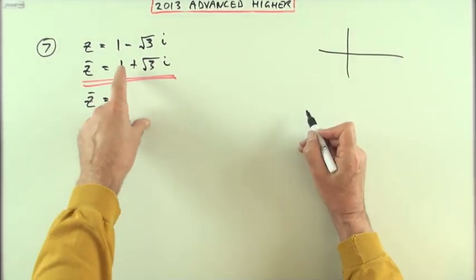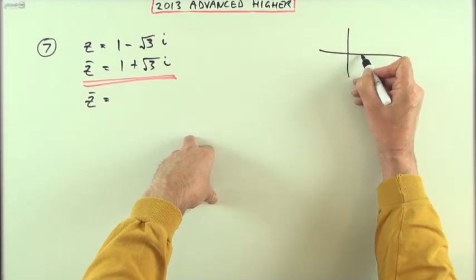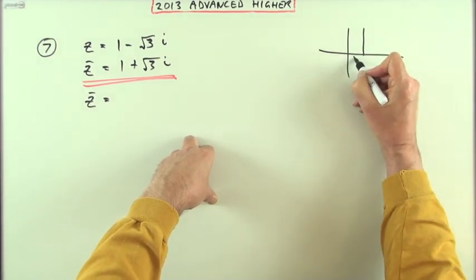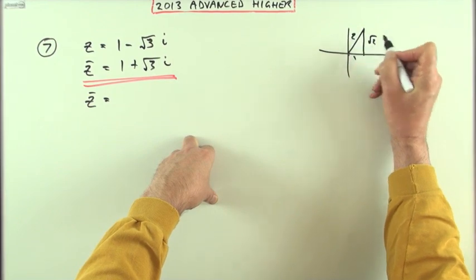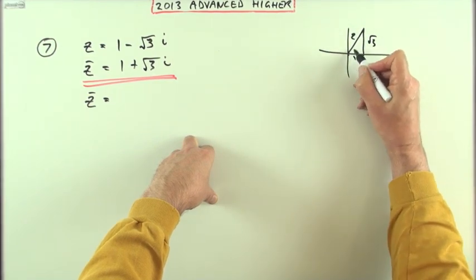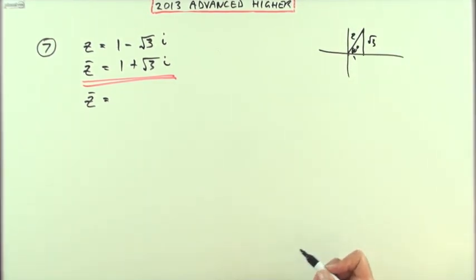One plus root three: one along the real, root three up. One, root three - so that's a two because it's a one-two-root-three triangle, and that angle's at 60 degrees.